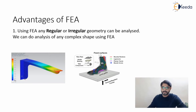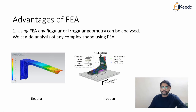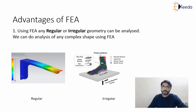By means of FEA we can take care of any kind of geometry, whether it's a regular shape or irregular shape. As shown in this figure, we can find out the stresses or strain produced inside a cantilever beam which has a regular cross section area. We can also find out various parameters for complex geometry like bone, which does not have a regular cross section area. So by means of FEA we can solve problems having regular or irregular geometry.